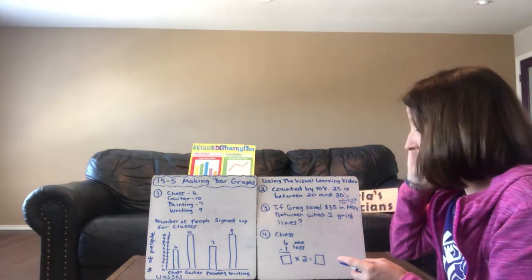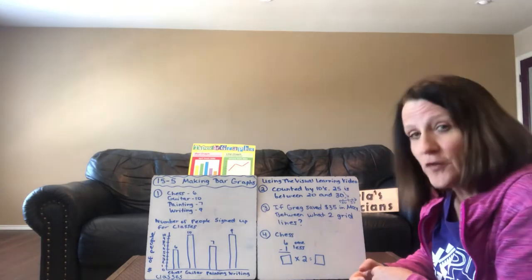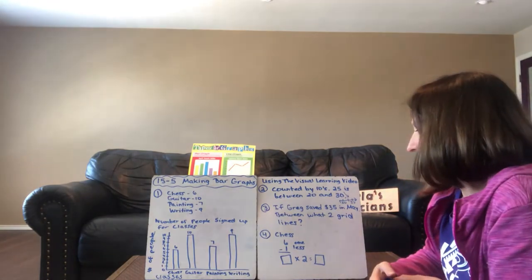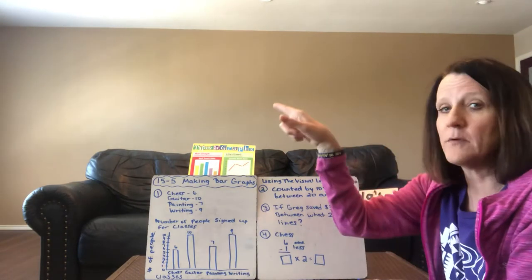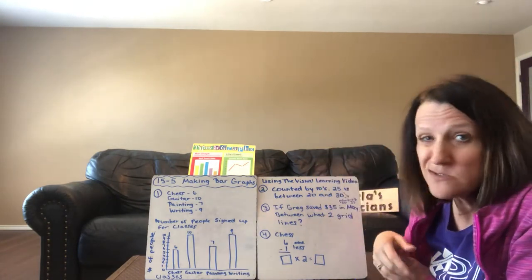On number three it says if Greg saved $35 in May, between what two grid lines? So again, think about we're looking at the number line. Remember we used to have it in my classroom?